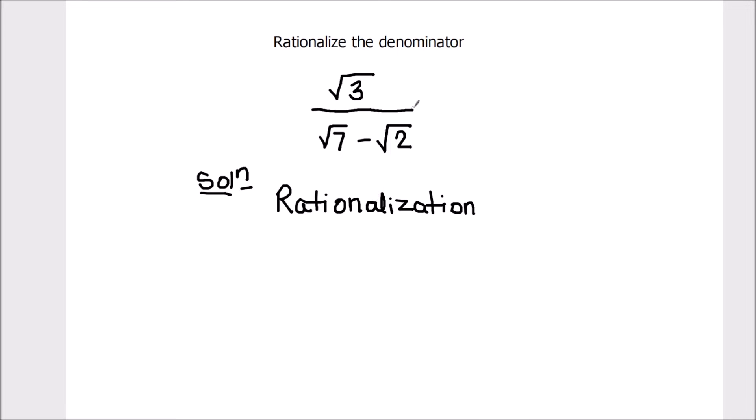For rationalization of this type of expression, the rationalization factor is root 7 plus root 2. That means we are going to multiply the numerator and denominator with this factor, which is same as the denominator of the expression with the opposite sign.